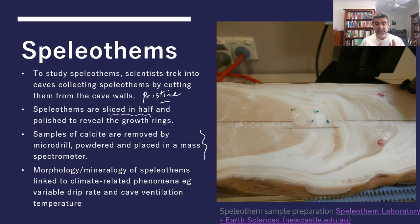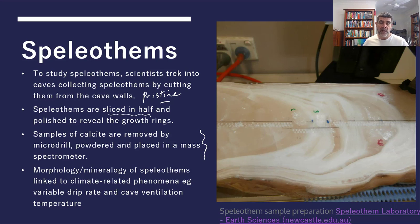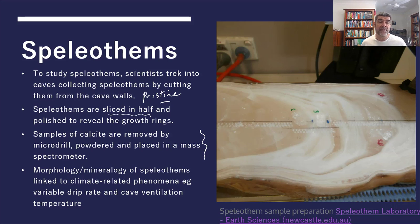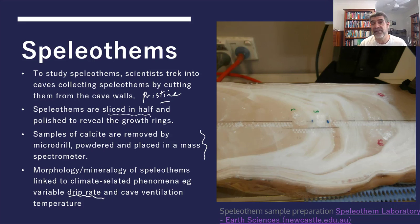One value of proxy data is lining up different data types to see if they tell a similar story. The morphology, structure, and mineralogy of speleothems link to climate-related phenomena. Drip rates for stalactites and stalagmites are affected by groundwater availability, which reflects rainfall levels. Variability in cave ventilation temperatures also affects evaporation rates, drip rates, and formation rates of cave structures.